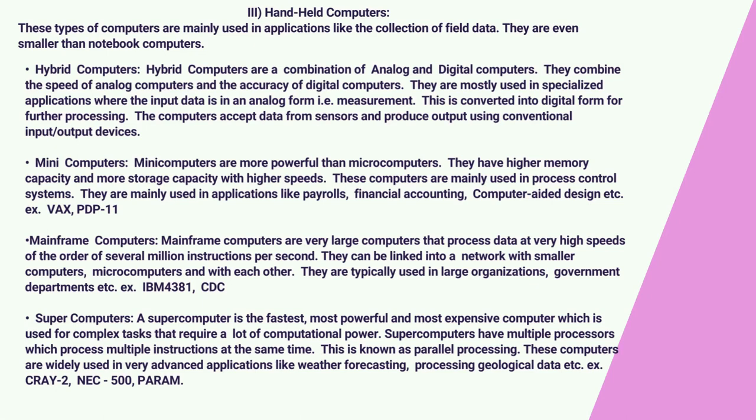Mainframe computers are very large computers that process data at very high speeds of the order of several million instructions per second. They can be linked into a network with smaller computers, microcomputers, and with each other. They are typically used in large organizations and government departments. An example is the IBM 4381 CDC.